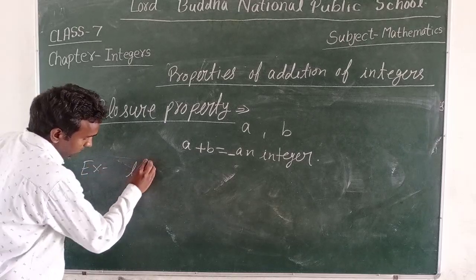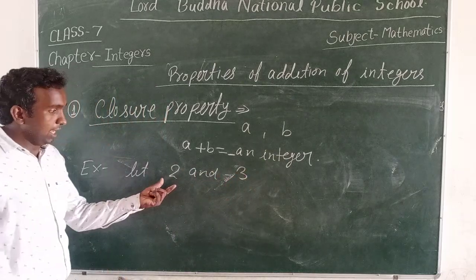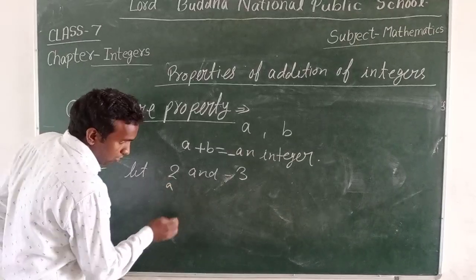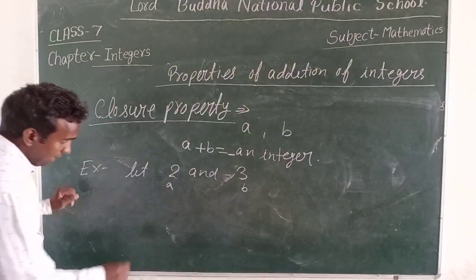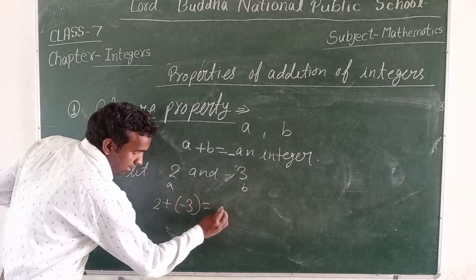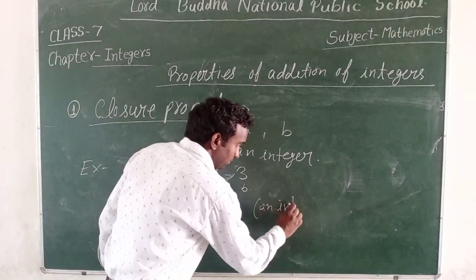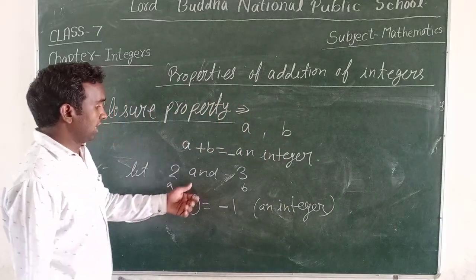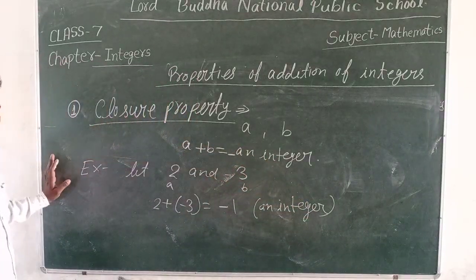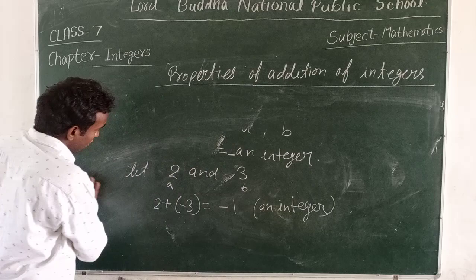For example, let's take two integers: 2 and minus 3. We find that 2 plus minus 3 equals minus 1. Minus 1 is an integer, which confirms the closure property.